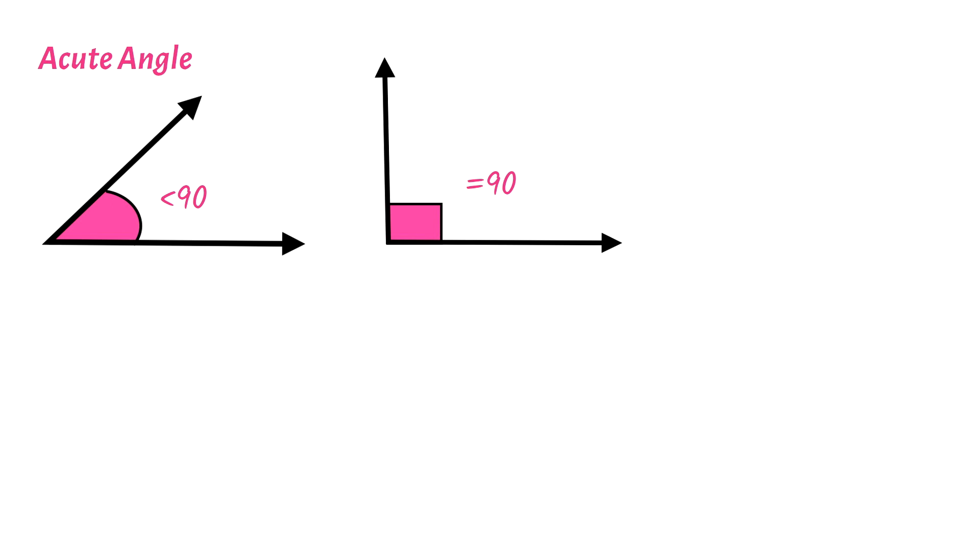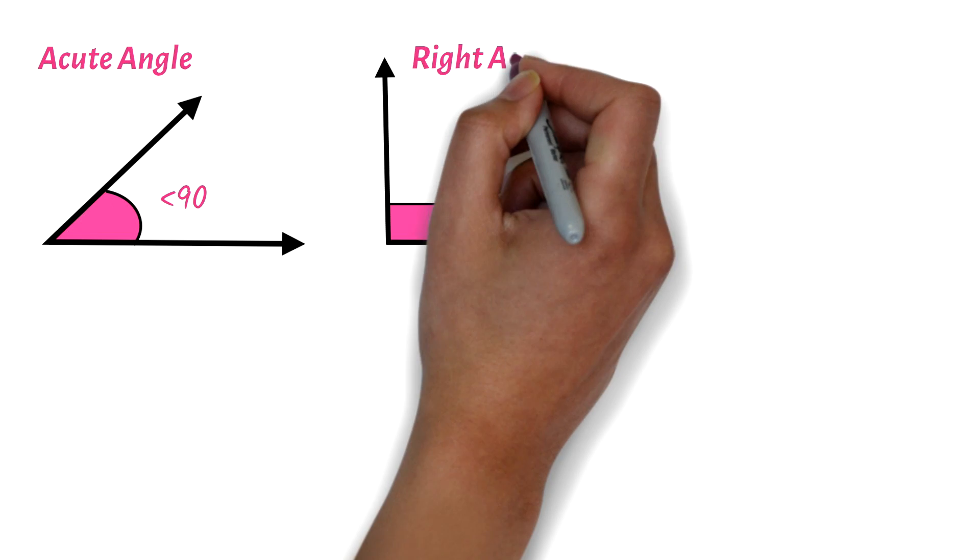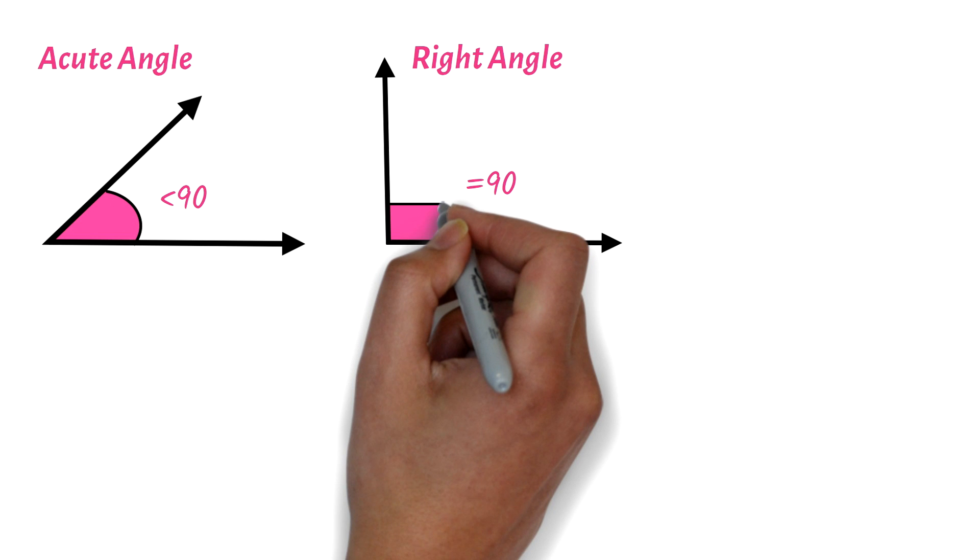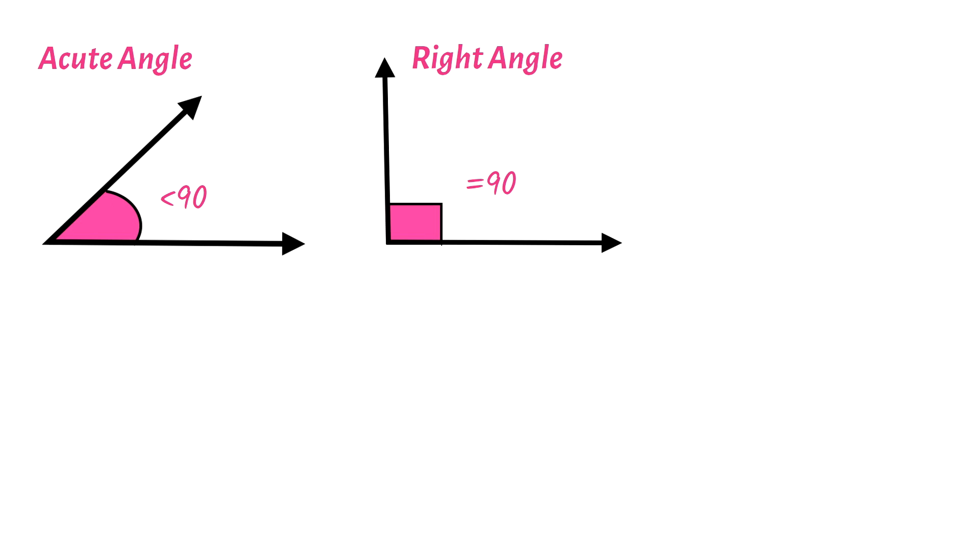If an angle is exactly 90 degrees, it is called a right angle. This is a very special angle, and it is normally represented by this square thing at the corner. Lines that meet at 90 degrees are said to be perpendicular lines. So in a question, if you are given that the lines are perpendicular, then you should know they are at 90 degrees.